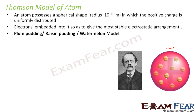This model was often called the plum pudding model, raisin pudding model, or watermelon model. It was called the watermelon model because it resembled a watermelon — if you look at a watermelon, it has small seeds embedded here and there. Similarly, electrons were embedded here and there inside the atom. The pudding represents the uniform distribution of positive charge, and inside that pudding you have plums or raisins here and there — hence all these alternative names.